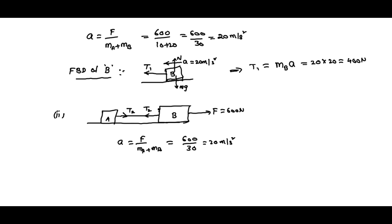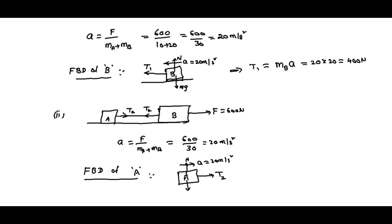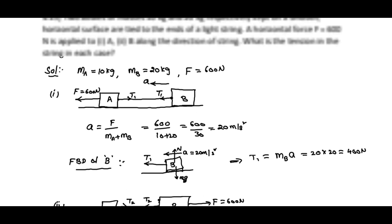For finding the tension, we take the free body diagram of block A. Tension T2 acts towards the right and acceleration is 20 m/s² towards the right. Normal reaction and mg act vertically, but we are not considering vertical forces since it is only horizontal motion. Therefore, T2 = mass of A × acceleration = 10 × 20 = 200 N. So the tension is different in the two different cases.